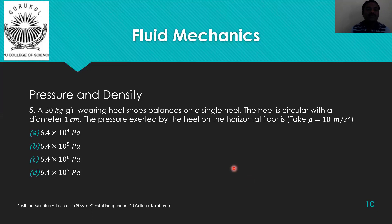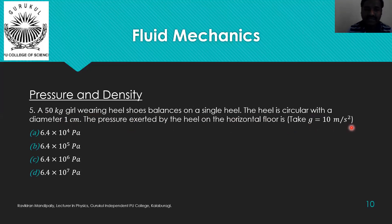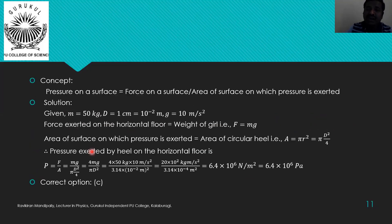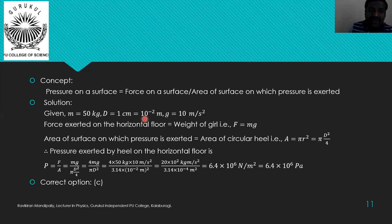Question five: A 50 kg girl wearing heel shoes balances on a single heel. The heel is circular with diameter 1 cm. Find the pressure exerted by the heel on the horizontal floor (g = 10 m/s²). All options are in pascals. Since answers are in SI units, we convert the diameter from centimetres to metres.